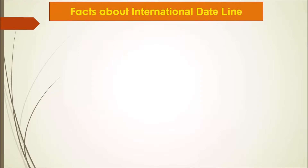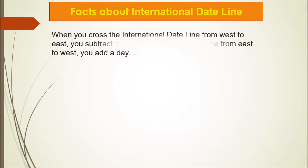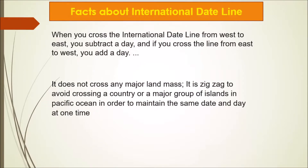The prime meridian was established in Greenwich, England in 1852. Regarding the international date line: when you cross it from west to east, you subtract a day, and if you cross it from east to west, you add a day.